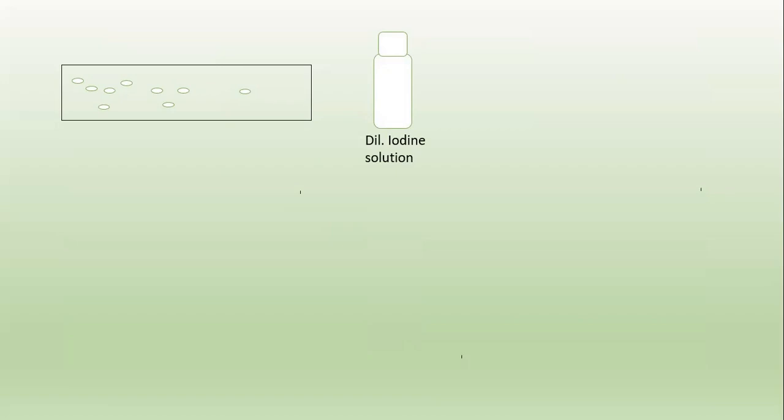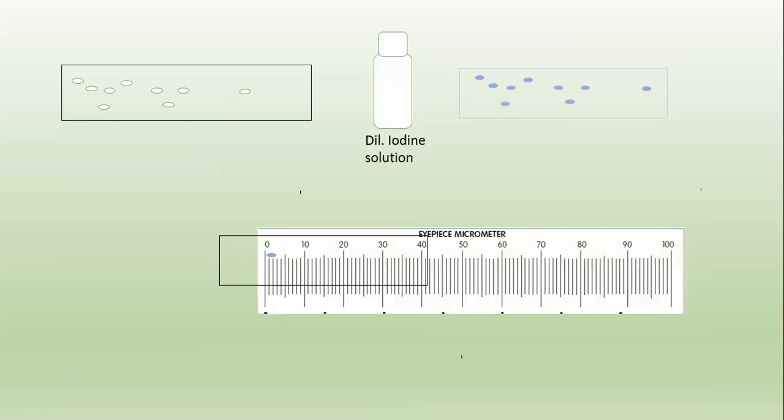First, let's see the measurement of the diameter of the starch grains. Take a slide — these are the starch grains which are to be observed in the microscope. It is quite difficult to observe this starch grain, so we have to stain it by utilizing iodine solution. We have to utilize diluted iodine solution just to stain this one, and the starch grains are converted into blue color because of the iodine solution.